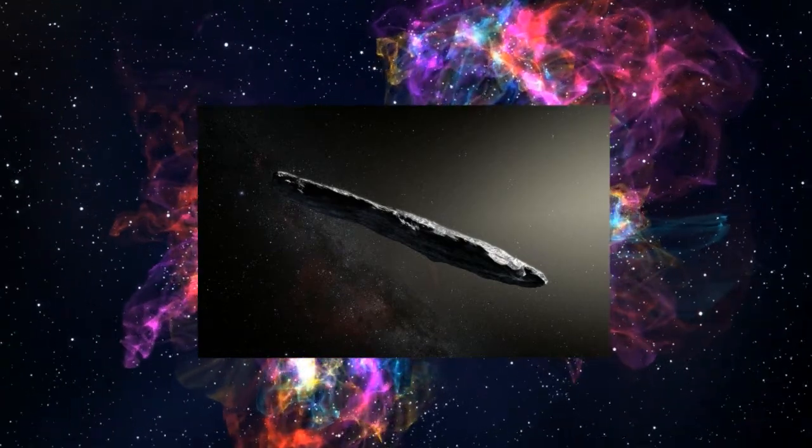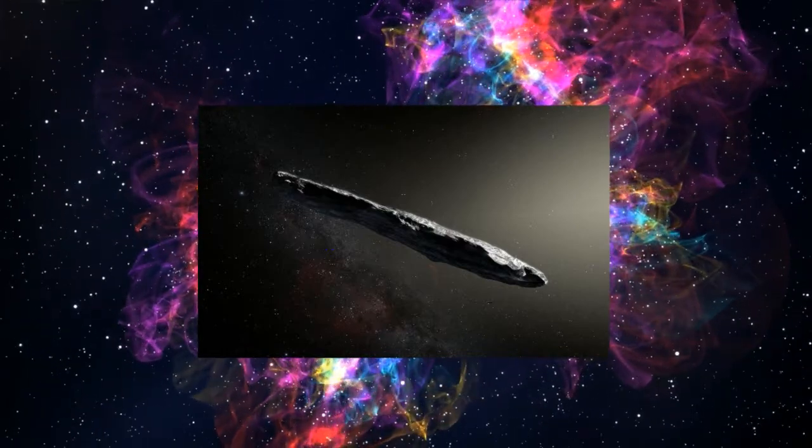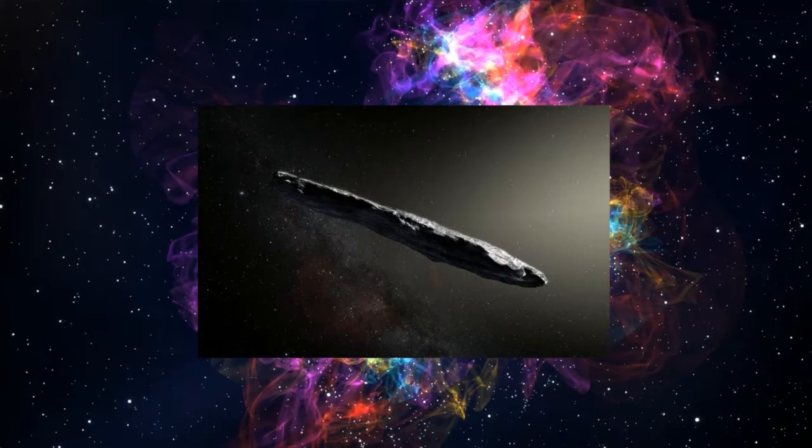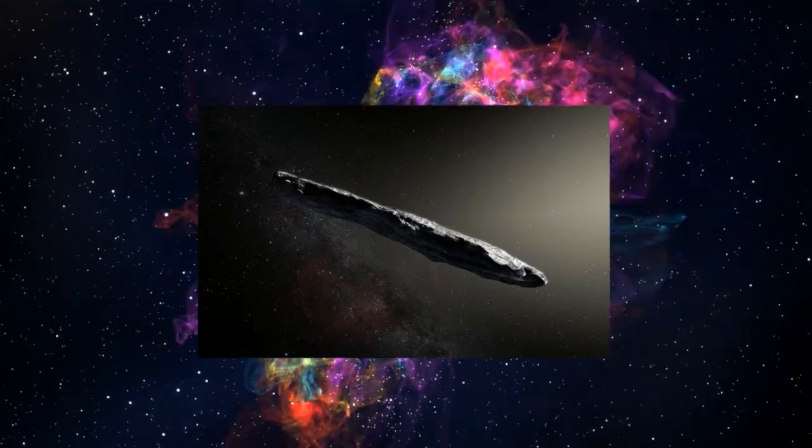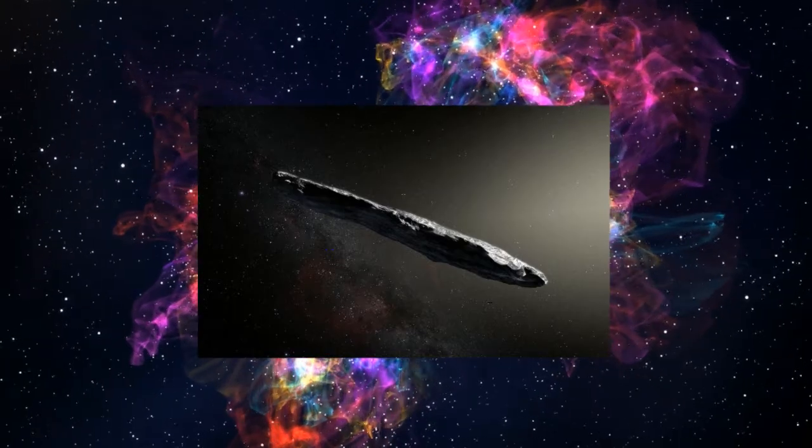This particular comet-asteroid-type thing very quickly demonstrated some very unusual characteristics. Number one, its trajectory indicated it was not from within our solar system. Number two, its shape was long and cylindrical, which is not a normal naturally occurring object. Number three, this thing actually sped up on its way out of the solar system.